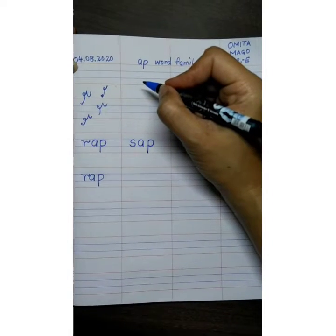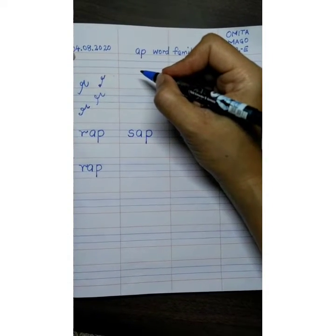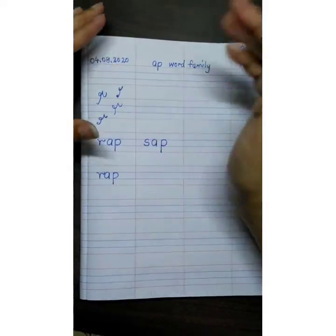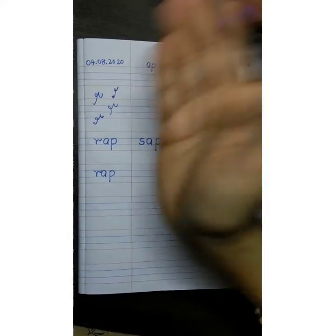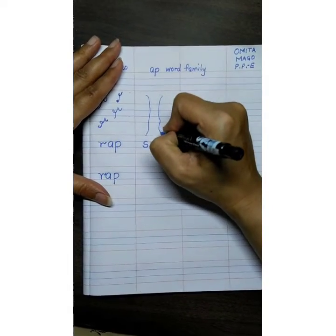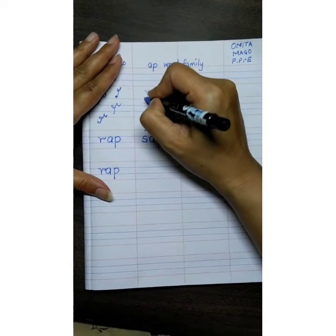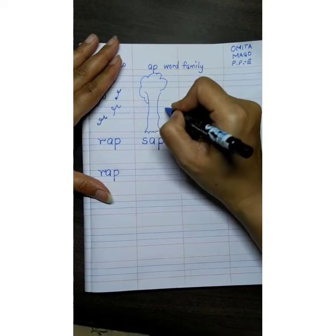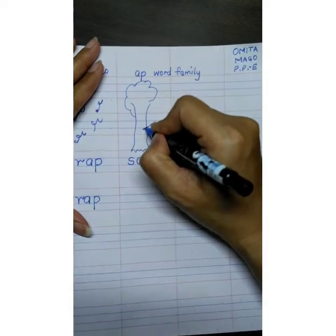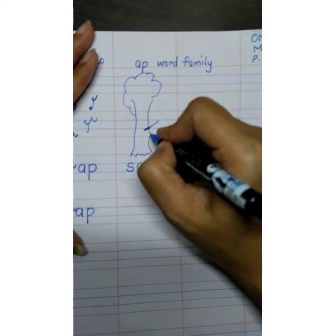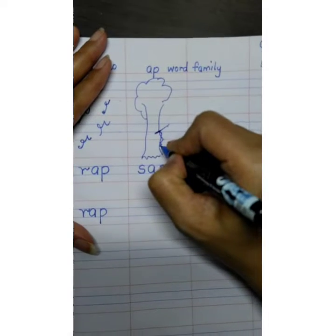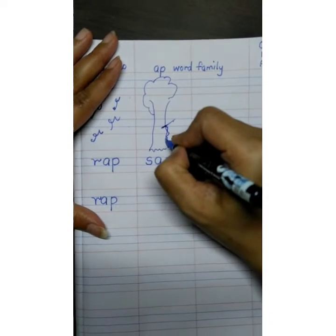Sap is the liquid that comes out from trees. When we pluck plants or when we cut the tree bark with an axe, then what comes out? The sap. And what do we call that? Sap.